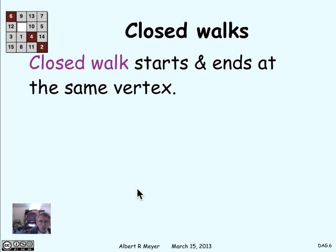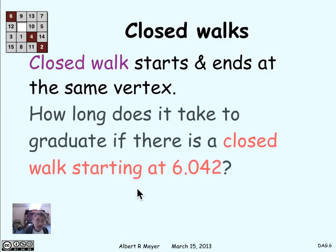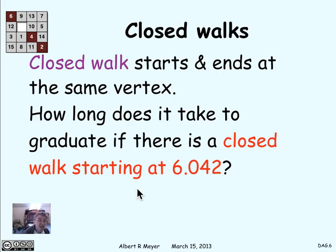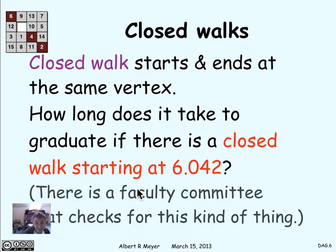Now, what happens if you have a closed walk? A closed walk is a walk that starts and ends at the same vertex. Suppose there was a closed walk that started at 6042 and ended at 6042 — how long does it take to graduate then? It takes a very long time, because you can't take 6042 until you've taken 6042, and you're never going to be able to take it. We definitely don't want the prerequisite structure of courses in a department to have a closed walk of positive length.